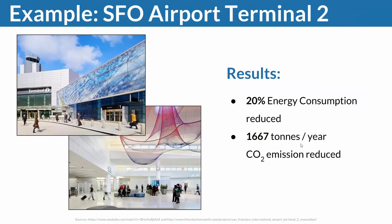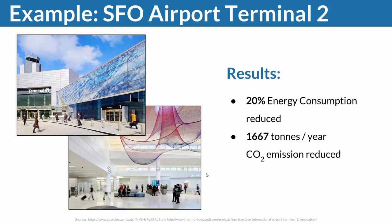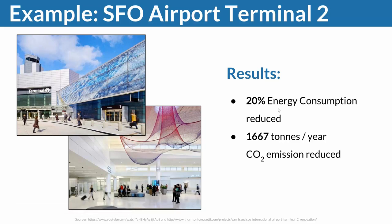One example I found particularly fascinating is the San Francisco airport, where there are lots of case studies and videos online about the renovation of Terminal 2. It was fascinating to learn that all of this is done by displacement ventilation — it's a very high-occupancy space, and since they only wanted to ventilate where humans are, they chose a displacement strategy. It works well for energy consumption, and it's being applied in more and more settings.